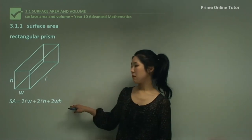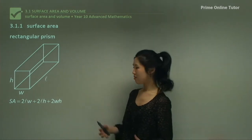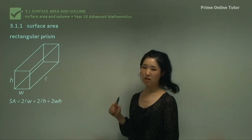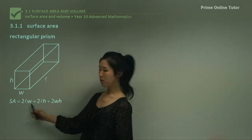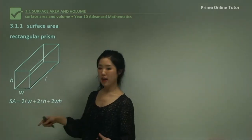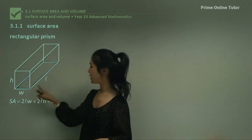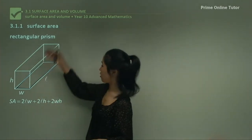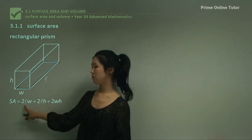You can memorize that, but I don't really think you have to, because it's actually pretty straightforward when you look at the diagram. As long as you've got a good diagram, you don't need to memorize any formulas. The 2LW indicates this particular area — the bottom part, W times L. There are two of them because there's one on the bottom and one on the roof — two identical shapes — so we simply multiply by 2.